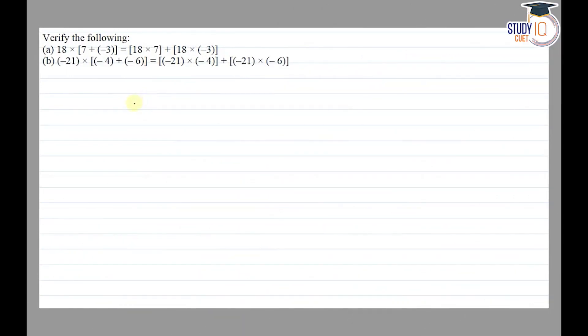Hello everyone, this question appears in Class 7 NCERT chapter on integers. This is the second question of exercise 1.3. The question says to verify the following: part (a) LHS is equal to 18 into 7 plus minus 3.